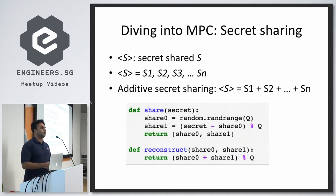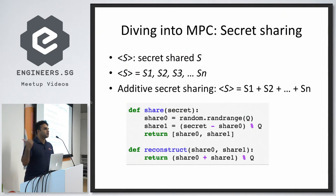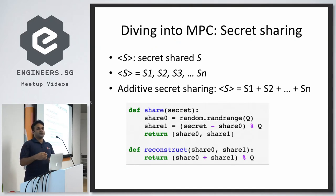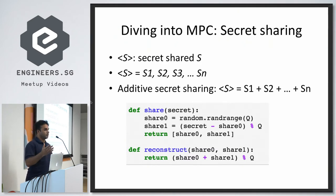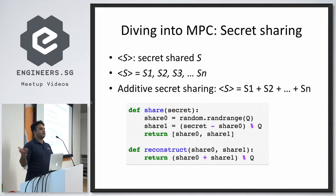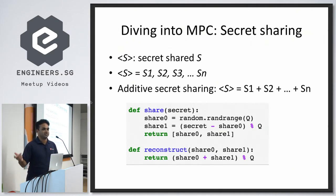In the share function, you pass a secret integer and find a random number between 0 and Q. In cryptography, operations are generally done on a finite field — the set of all numbers from 0 to Q minus 1. To share the secret, you generate a random number between 0 and Q; that's share 0. Share 1 is the secret minus share 0. To reconstruct, you take the two shares, add them up, and do it mod Q.